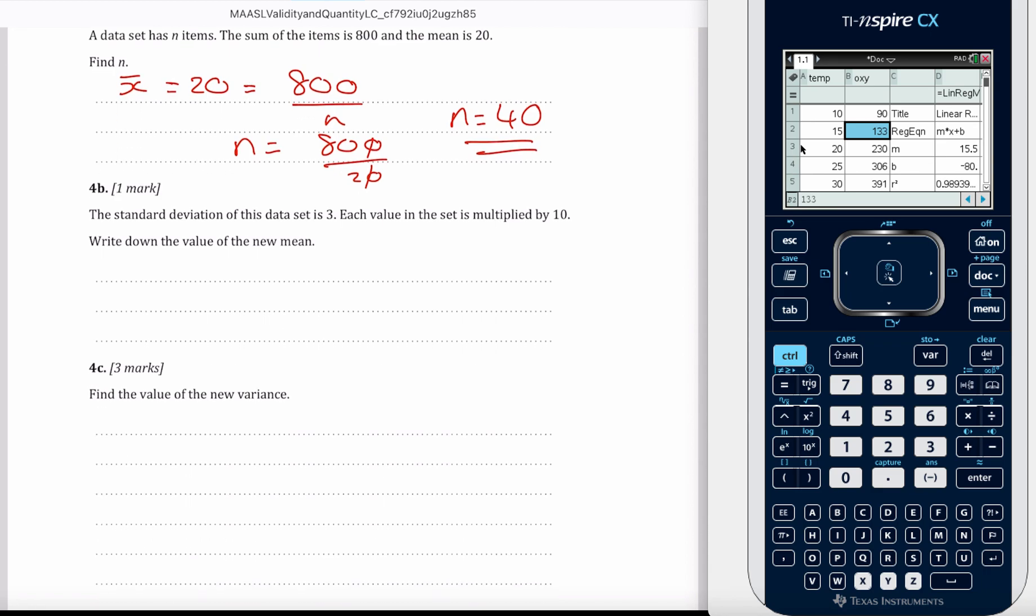The standard deviation of this data set is 3. Each value in the set is multiplied by 10. Write down the value of the new mean.